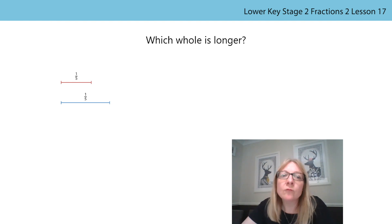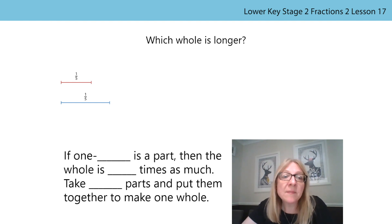If one part represents one-fifth, how many equal parts would we need to create the whole? We could use these stem sentences to help us. You will be familiar with these from the last lesson. Let's say them together. If one-fifth is a part, then the whole is five times as much. Take five parts and put them together to make the whole.